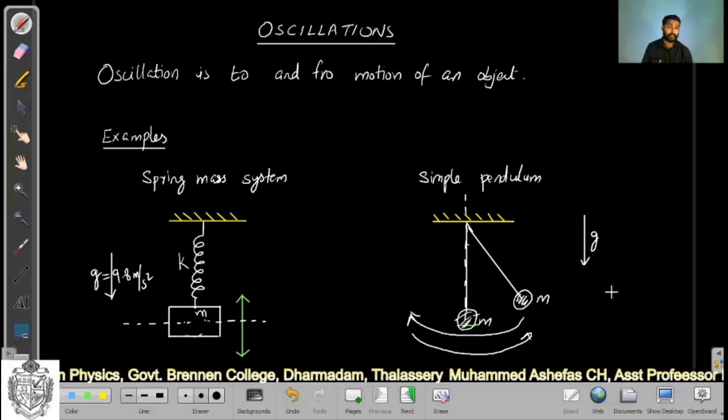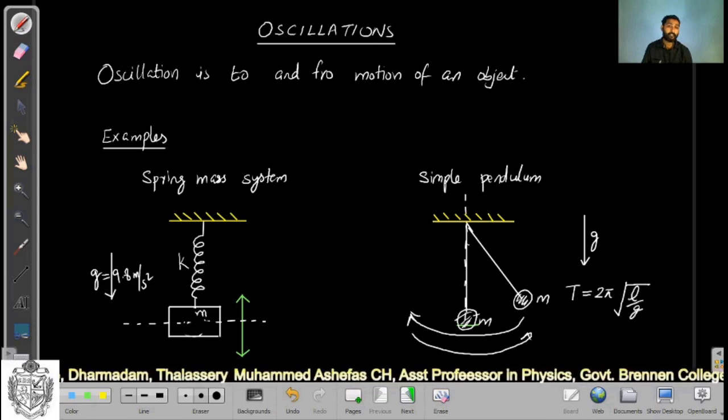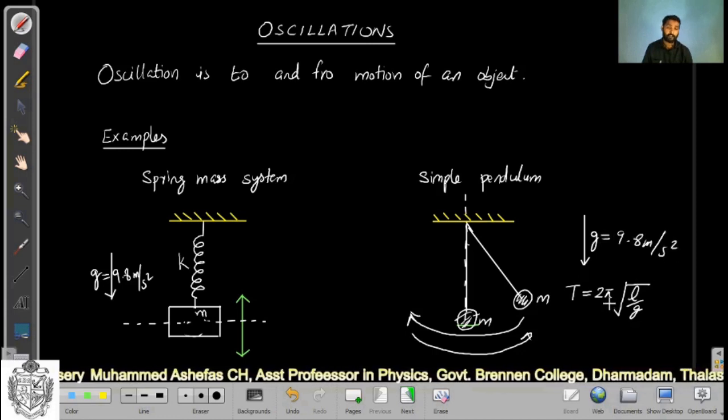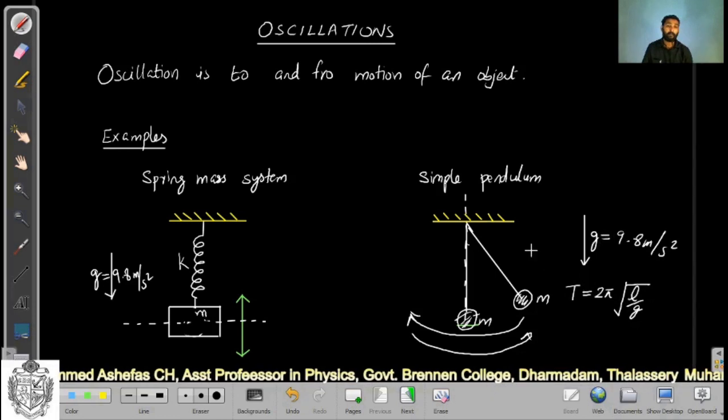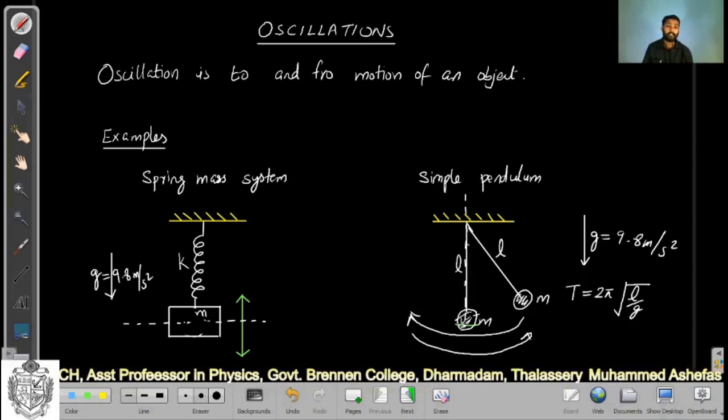What is the time required to come back to its original position? That is called the time period, and the time period is given by T = 2π√(l/g), where g is the acceleration due to gravity which is a constant at 9.8 meters per second squared. Therefore, time period depends upon the length of this pendulum, l.